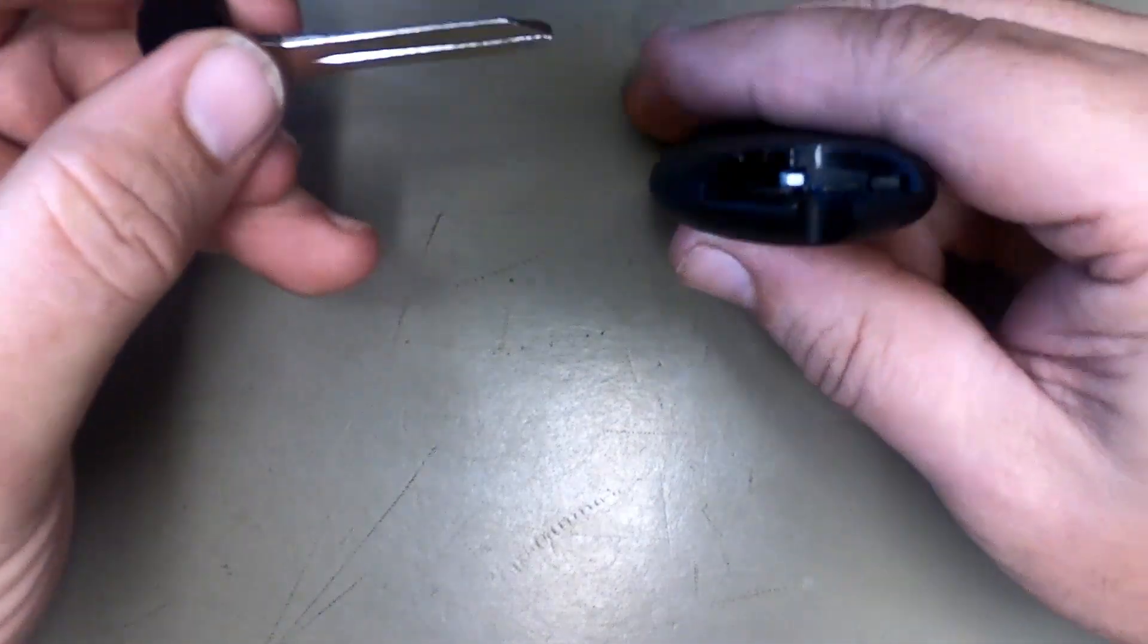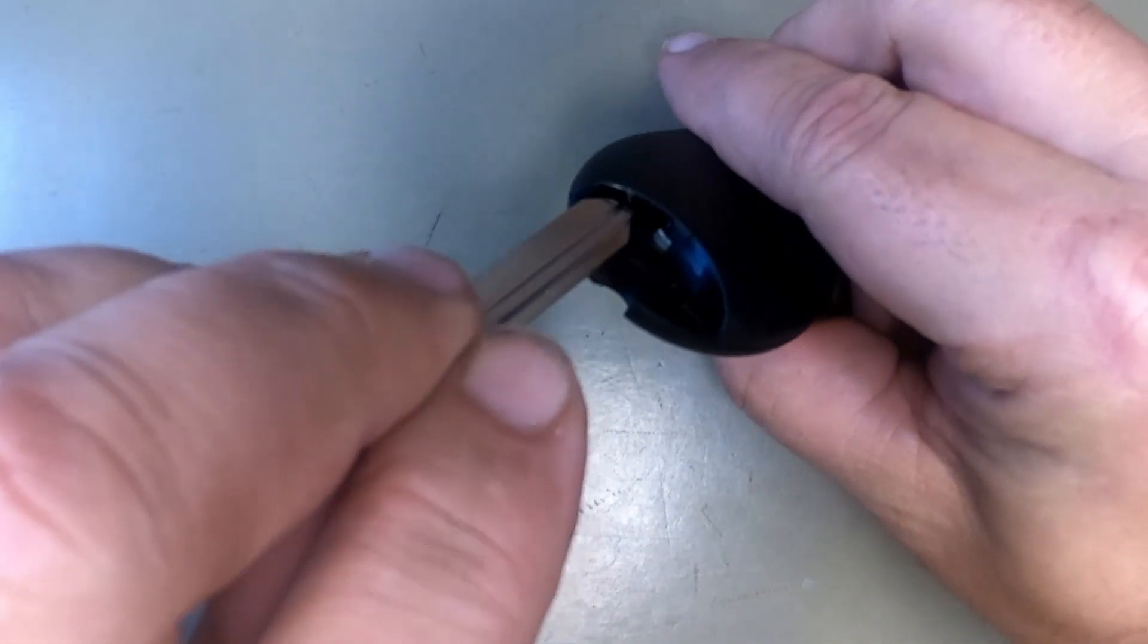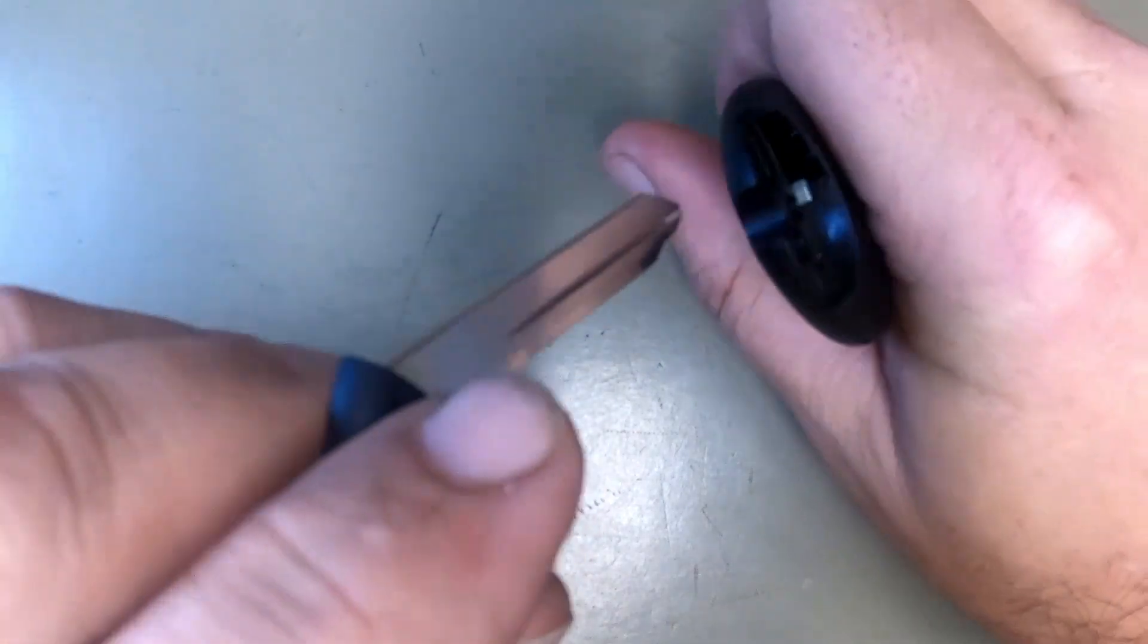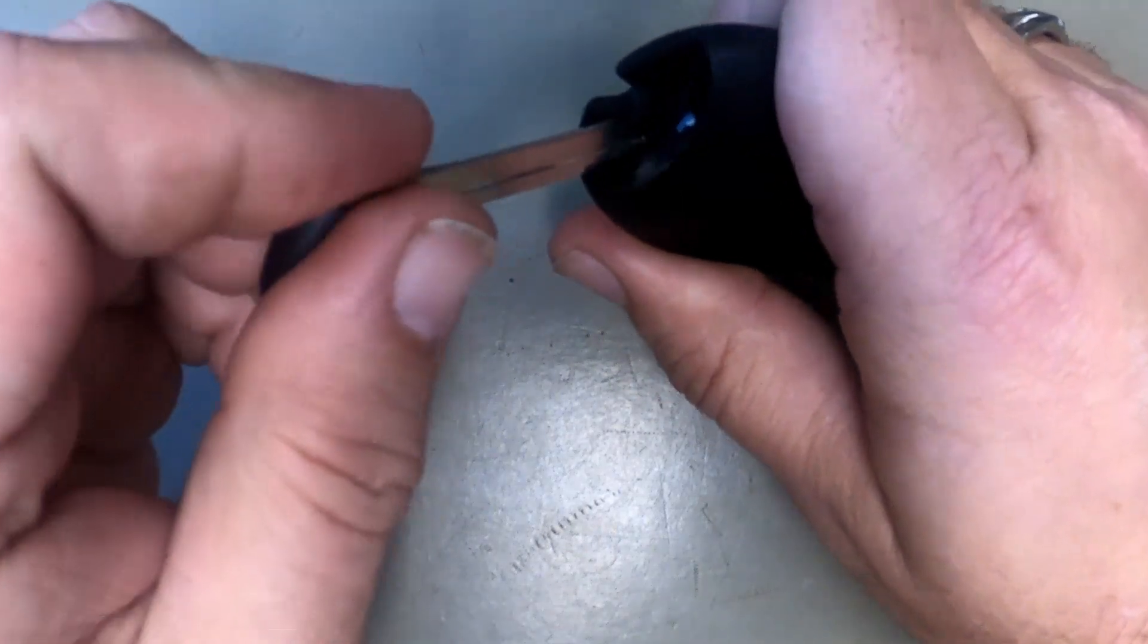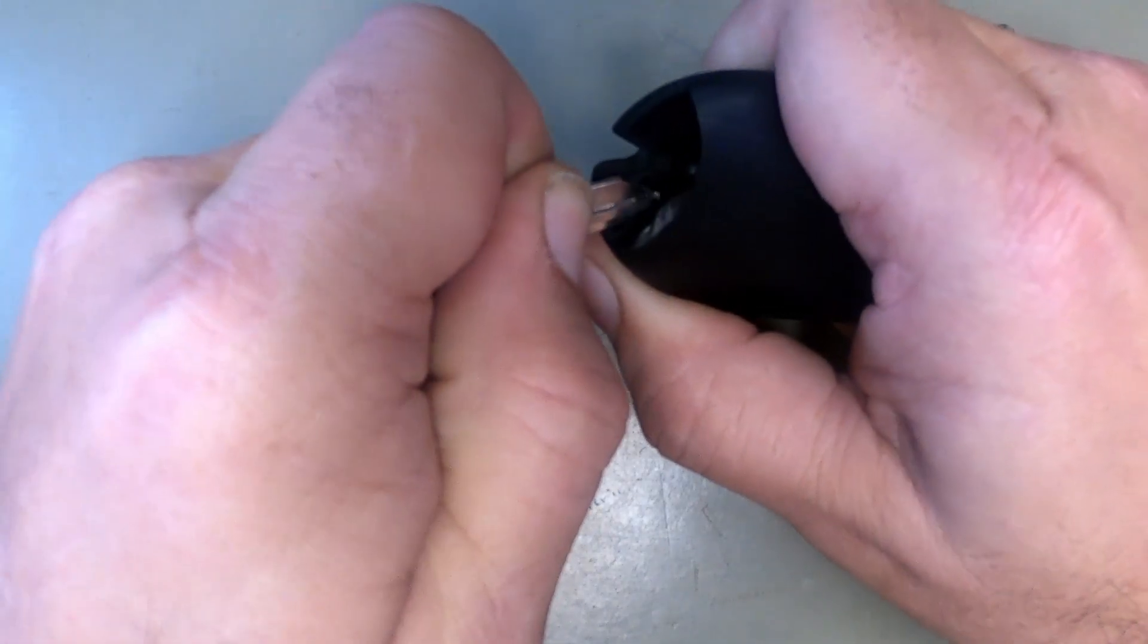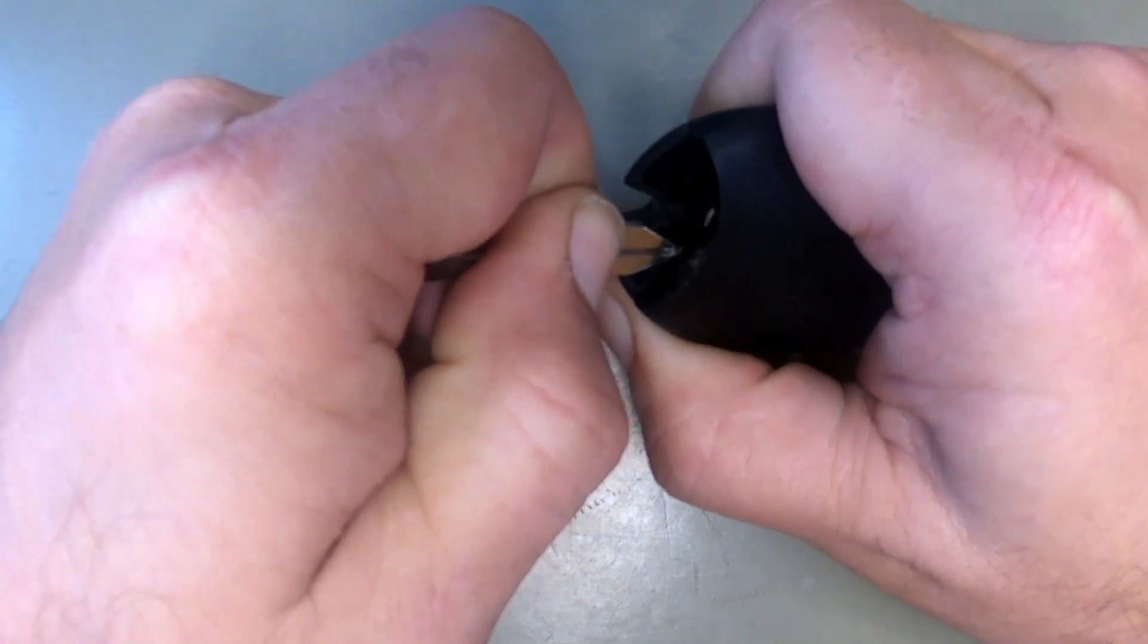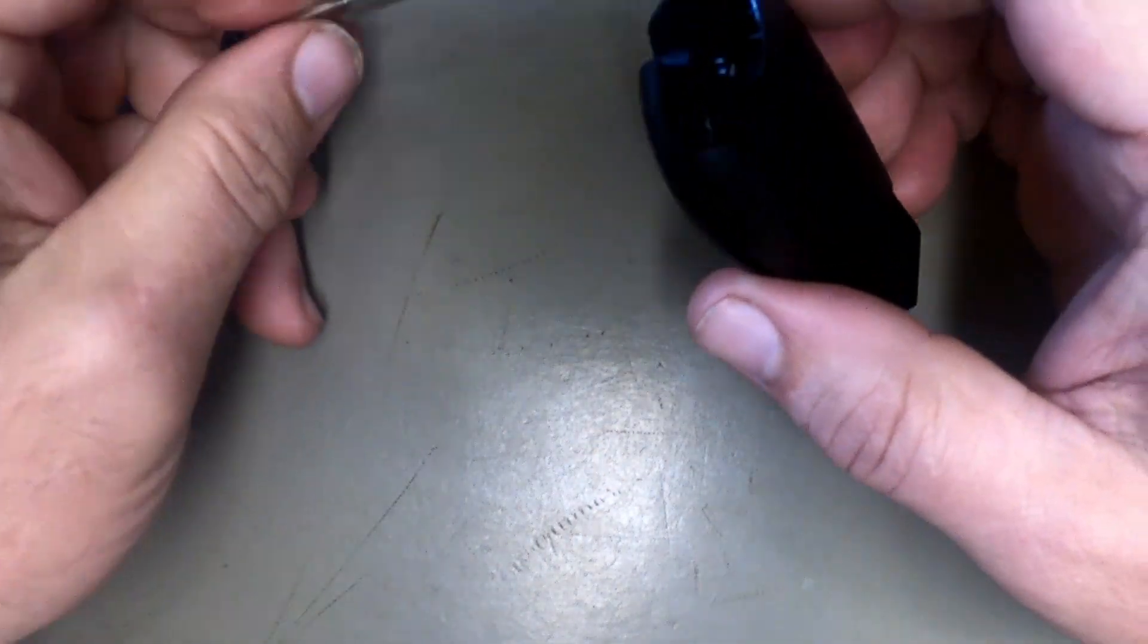Once the blade comes out, you'll see this right here is where the key blade went in. Right to the opposite side, there's a little hole, a little indentation. Go ahead and take your key corner, put it in, and use that to pop this open. And you notice it pops open.